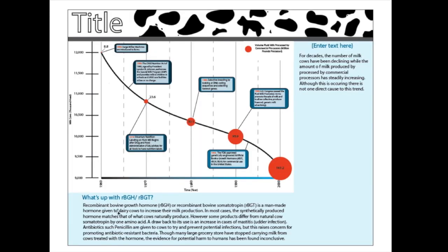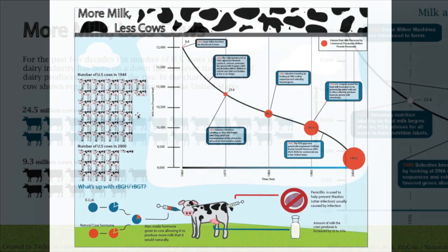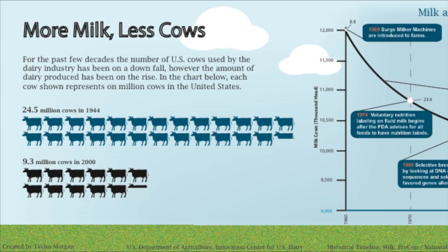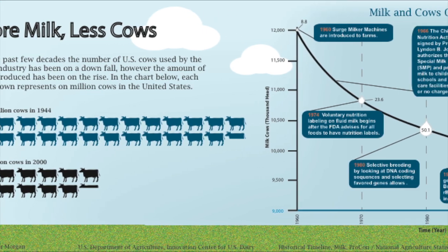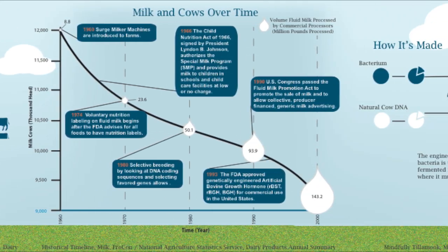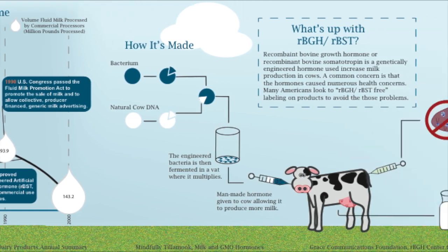She decided to use bubbles to represent the amount of milk, plot the number of cows on the y-axis, and add call-outs for important historical developments. In her final infographic, she reinforced the reduction in number of cows with a pictogram on the left side and added more context for the science behind one of the reasons for increased milk production: the introduction of recombinant bovine growth hormone.